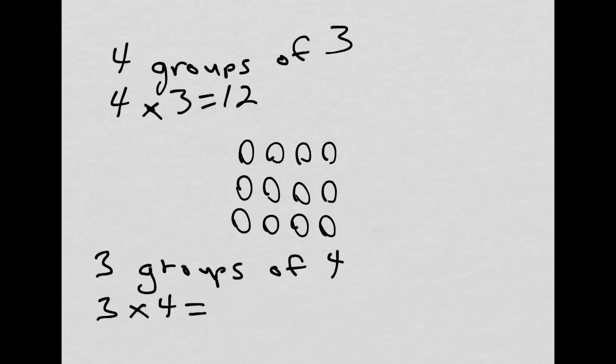And we can again see if we count by fours. Count with me. Four, eight, twelve. We still have twelve. So we see that three fours is the same as four threes. And this has a special name. This is called the commutative property.